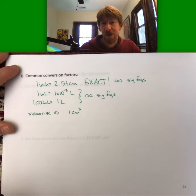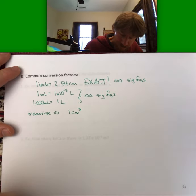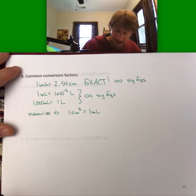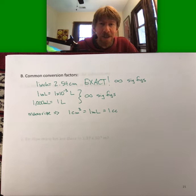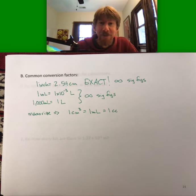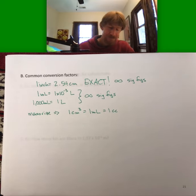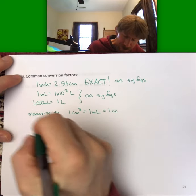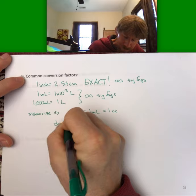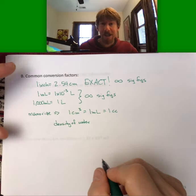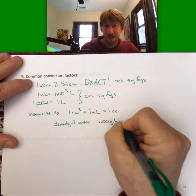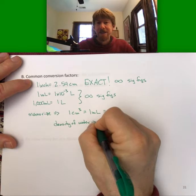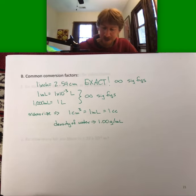One centimeter cubed, also called a cubic centimeter, equals one milliliter — sometimes called one cc in medical fields. So 500 milliliters equals 500 cubic centimeters. Also memorize the density of water, because we use it as a conversion factor frequently. The density of water is 1.00 grams per milliliter — a measured quantity.